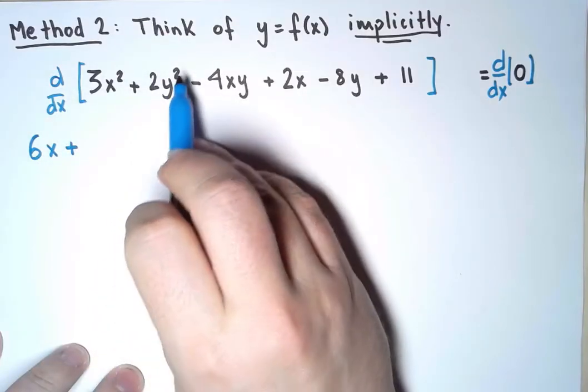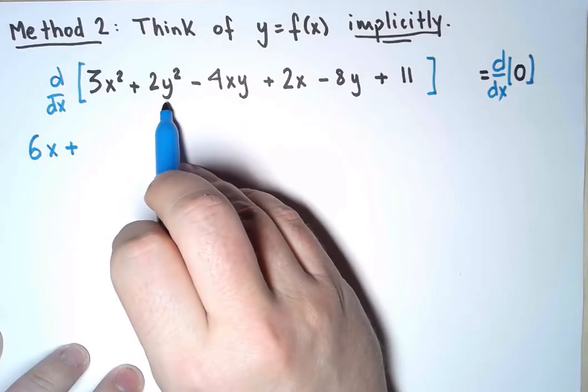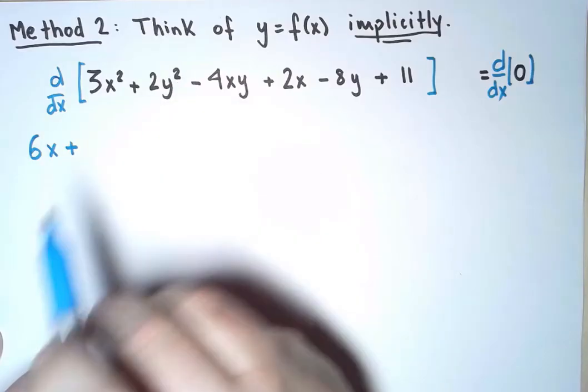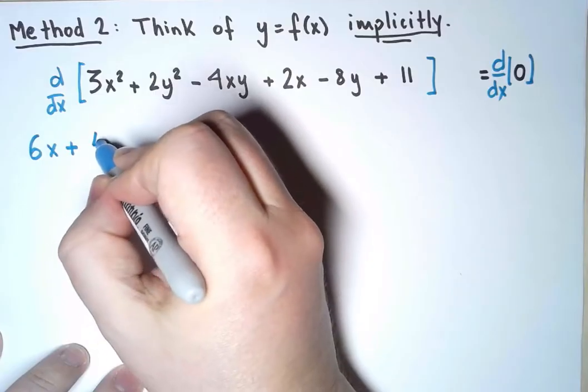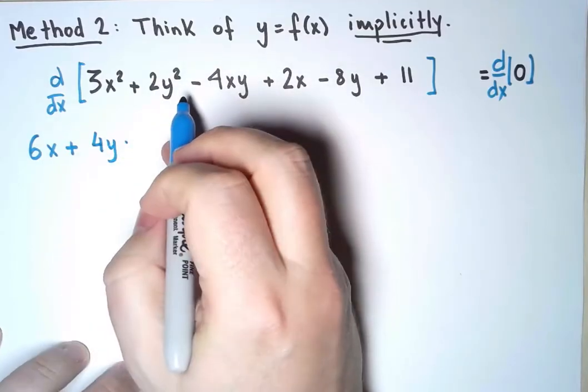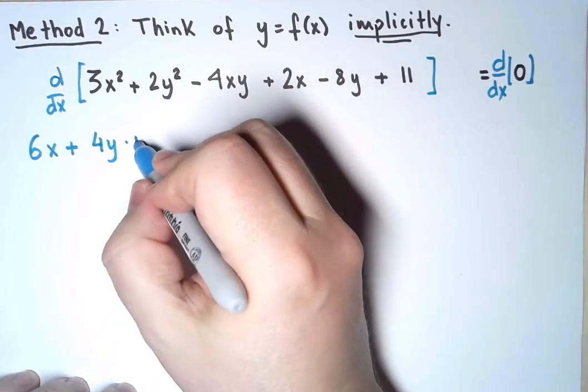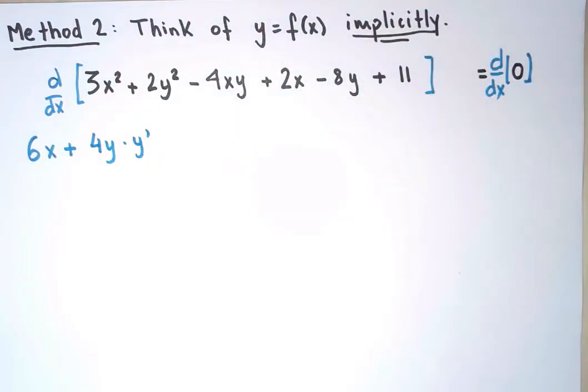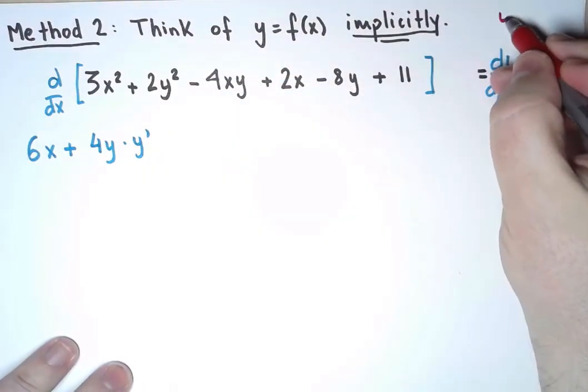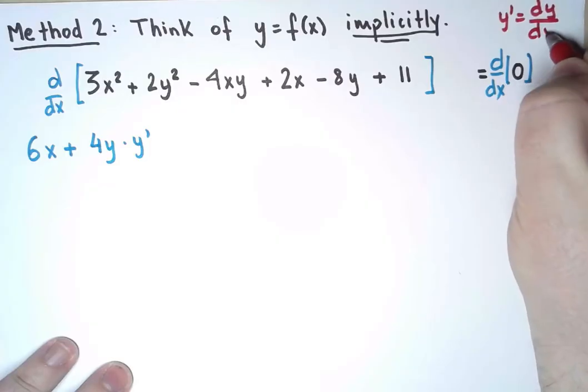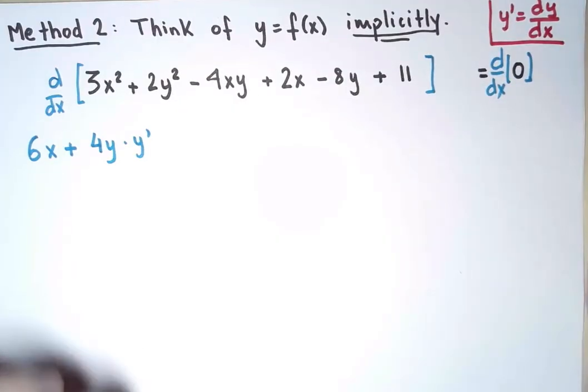Now, to take the derivative of 2y², remember I'm thinking of this as 2 times a function squared. So, using the chain rule, the derivative could be 4y times the derivative of this function. And I'm going to call the derivative y' where y' is short for dy over dx, because I don't want to write dy over dx all the time. And I'll continue.